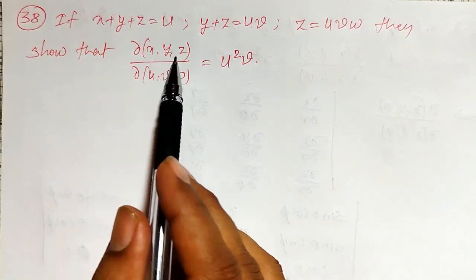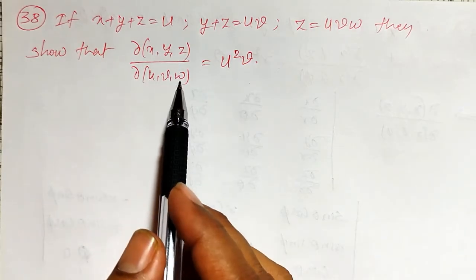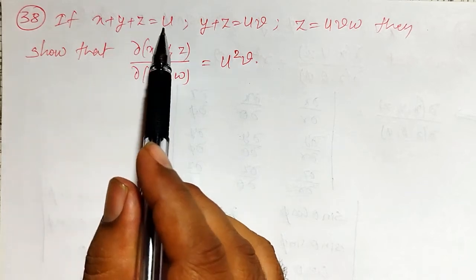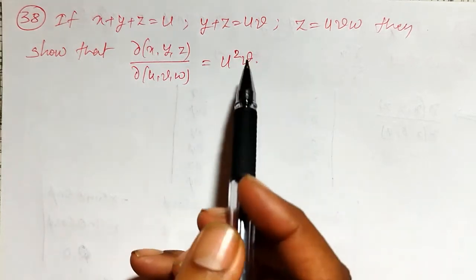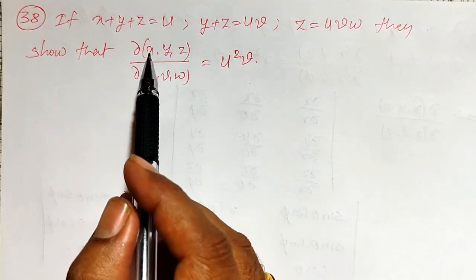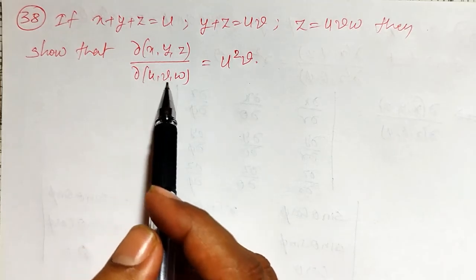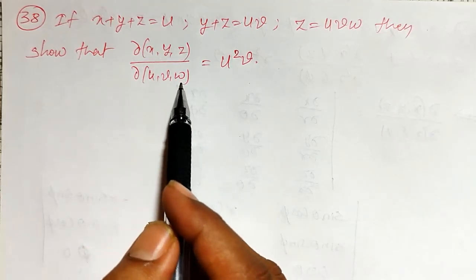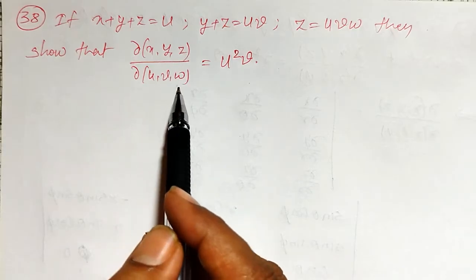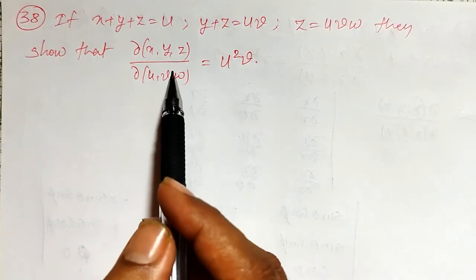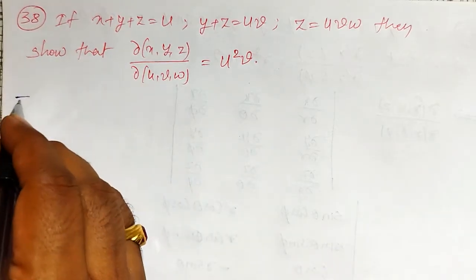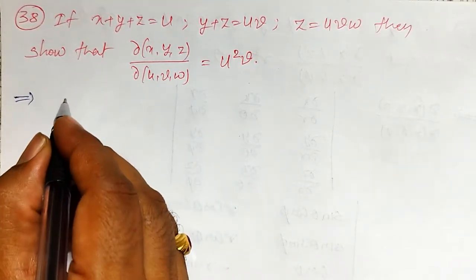To solve this one, x, y, z must be a function of u, v, w. But here they are given x, y, z equal to u, y plus z. It is a mixed type of problem. But I can convert x purely in terms of u, v, w; y purely in terms of u, v, w; and z also in terms of u, v, w. Then I can solve this one. Before that, let me define the Jacobian of this one first.